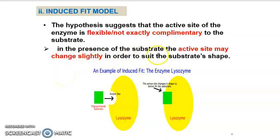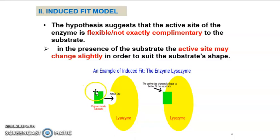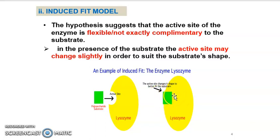In the presence of the substrate, the active site may change slightly in order to suit the substrate shape. Looking at the diagram, the shape of the substrate is not the same or exactly complementary to the active site of the enzyme. But in the presence of the substrate, it can induce a slight change in the active site of the enzyme, so the substrate can fit with the active site of the enzyme.